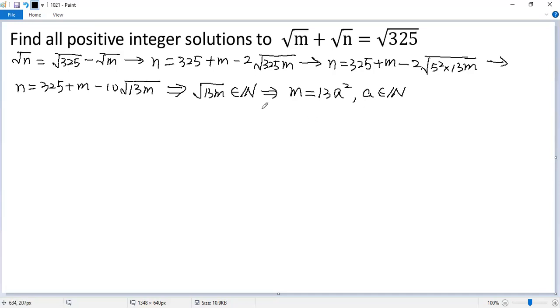By symmetry, n also has a similar form. So let's let n equals 13 times b squared. Again, b is a natural number.